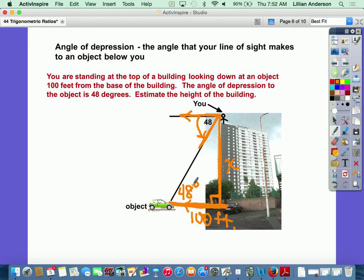So now we're back to where we were with the other problem. How can I set this up to solve? Which trig ratio am I going to use? Well, 48 degrees is my main angle, x is opposite of that, 100 feet is adjacent.